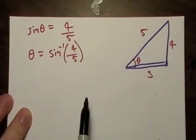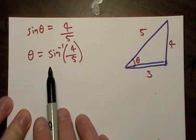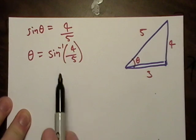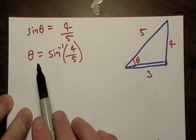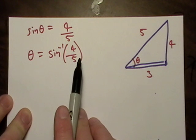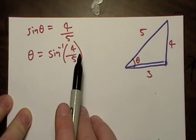The inverse sine of 4/5 is basically the angle whose sine is 4/5.